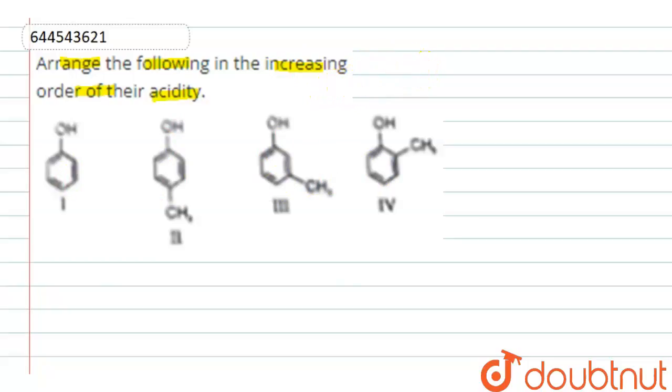Now see, these compounds are phenols. Phenol's conjugate base is phenoxide. The substituents which increase the stability of the phenoxide naturally make phenol more acidic.